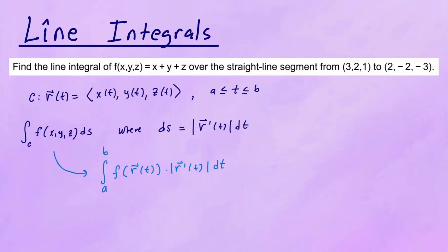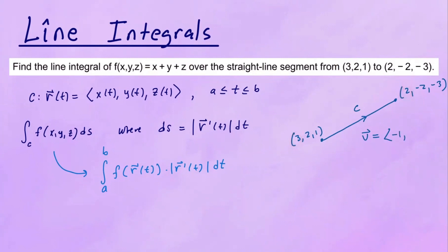Suppose you have these three points in space. Our initial point is 3, 2, 1 and the final point is 2, negative 2, negative 3. We need to find the direction of this, so we need a vector equal to the final point minus the initial point. For the x-component: 2 minus 3 is negative 1. Then negative 2 minus 2 is negative 4. And negative 3 minus 1 is negative 4. So our direction vector is negative 1, negative 4, negative 4.